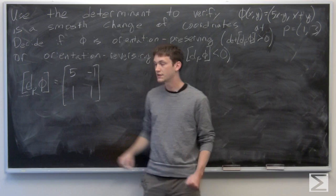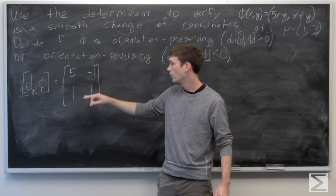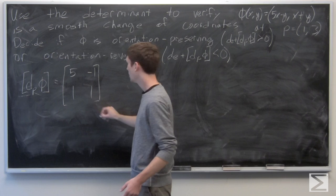So we know that the Jacobian matrix is [5, -1; 1, 1]. We can calculate the determinant easily,